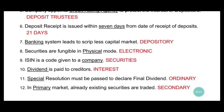Eighth one: securities are fungible in physical mode. Physical mode is wrong — securities are fungible in electronic mode. Fungible means the state of being interchangeable. Securities in electronic mode cannot be distinguished from each other; they don't have distinctive numbers or certificate numbers. So 'physical mode' changes to 'electronic mode'.